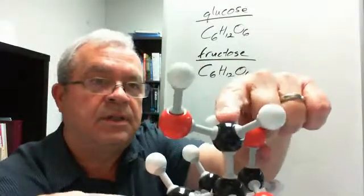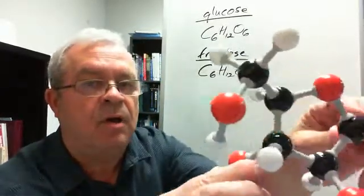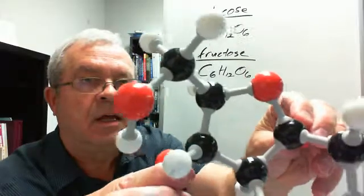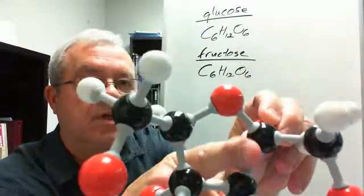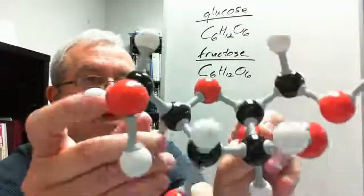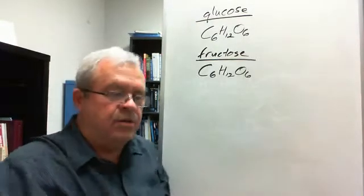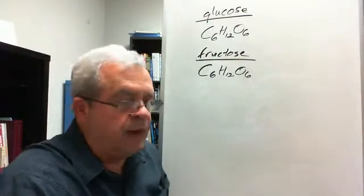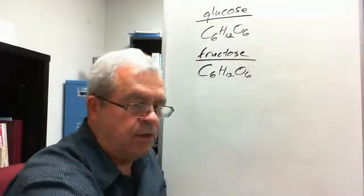And a fructose ring is smaller. It only has one oxygen atom, just like glucose. It only has four carbon atoms, and two carbon atoms are off to the side of the ring. And so, 24 atoms, same number, same kind of atoms, put together two different ways.